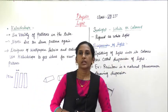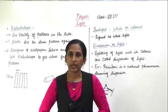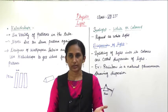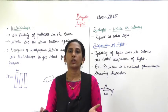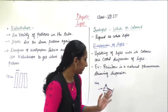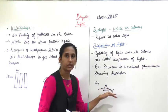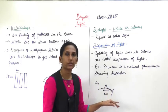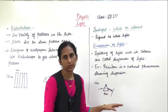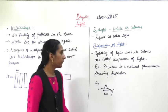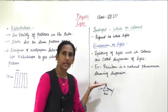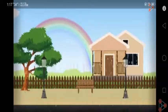This process — the splitting of light into its colors — is called dispersion of light. When sunlight disperses into its seven colors, it is called dispersion of light. This natural phenomenon can be seen in the rainbow, where the splitting of colors occurs.